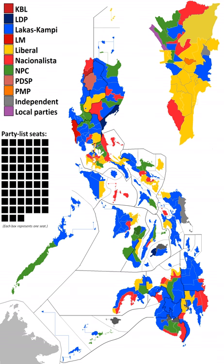Special Elections: Bulacan 1st, November 13, 2010 — incumbent Ma. Victoria Sy Alvarado won with almost 70% of the vote over Roberto Pagdanganan. Note that this is considered a part of the general election, only that it was delayed for several months.